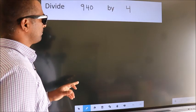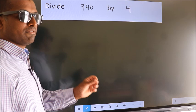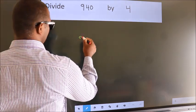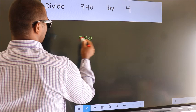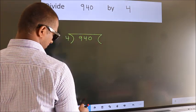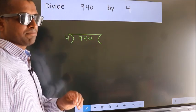Divide 940 by 4. To do this division, we should frame it in this way: 940 here, 4 here. This is your step 1.